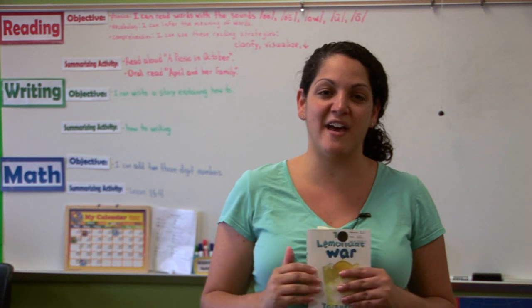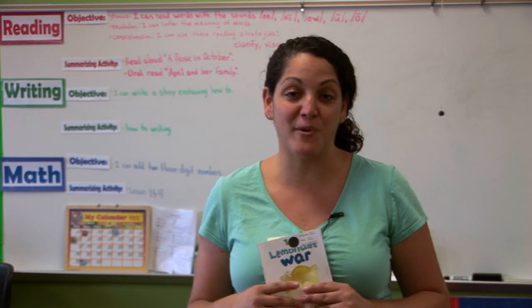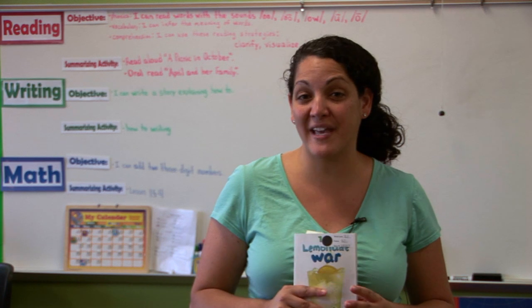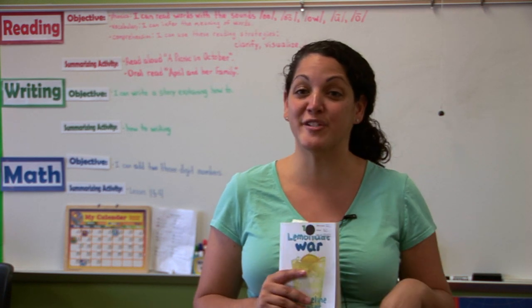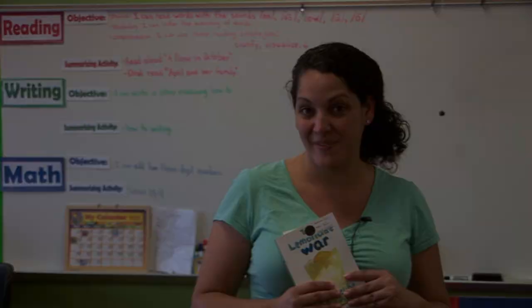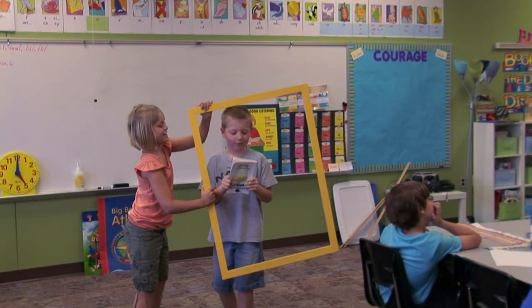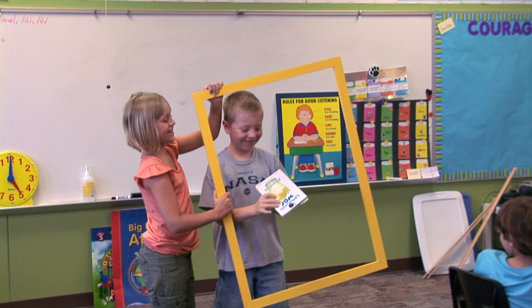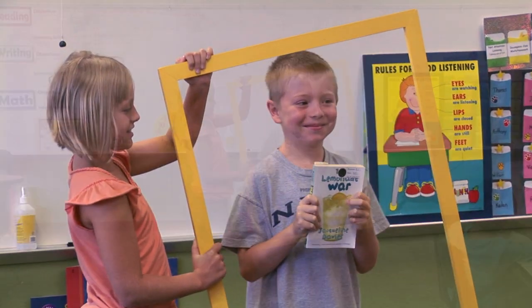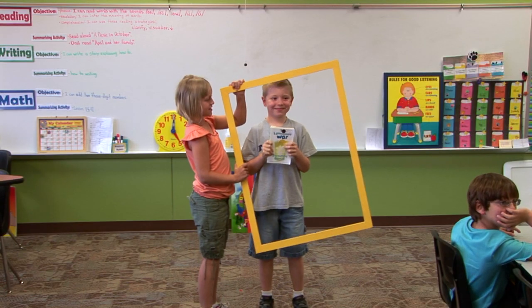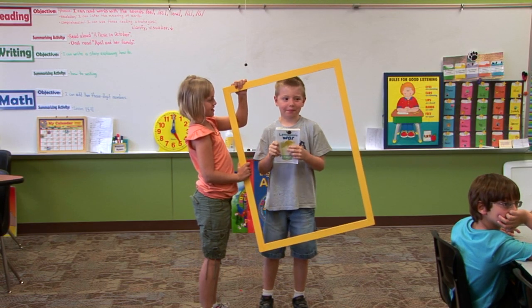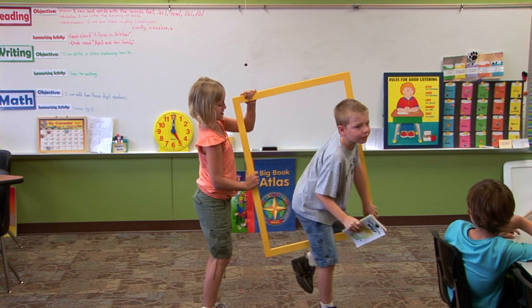In the meantime, when they're up here performing, students in class have each come up with a question that they are going to ask both Jessie and Evan, and they are going to answer those questions from Jessie and Evan's point of view. A prop, such as the picture frame, helps a student transition from himself to his story persona.